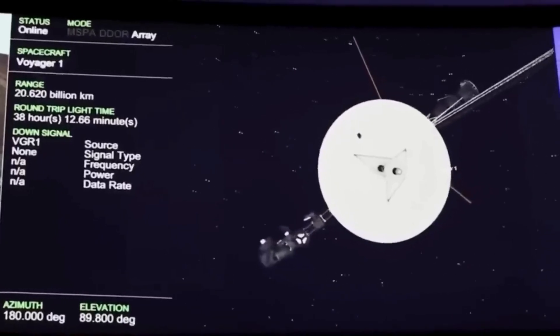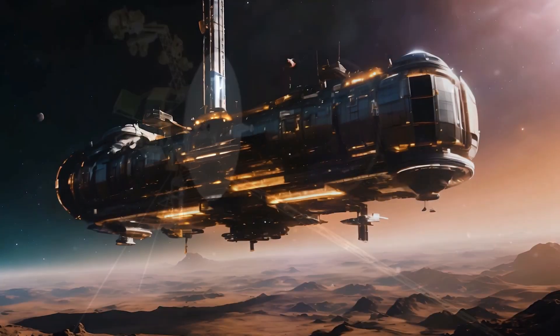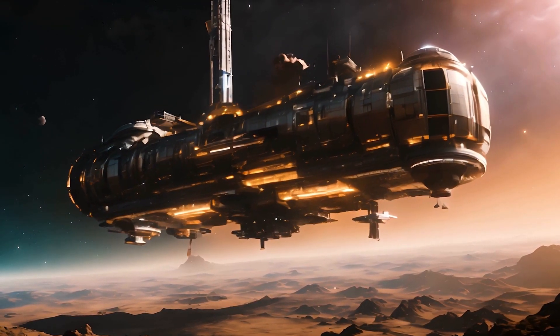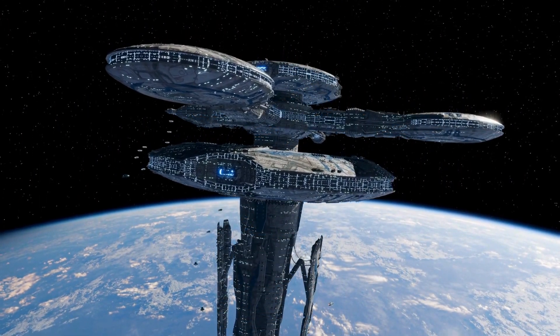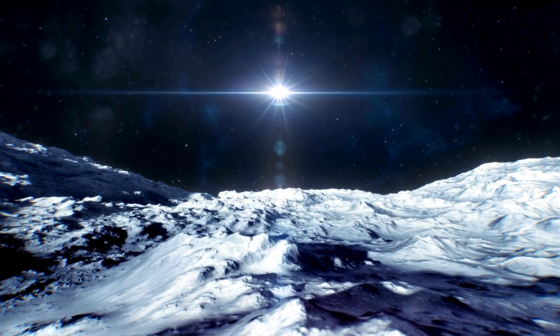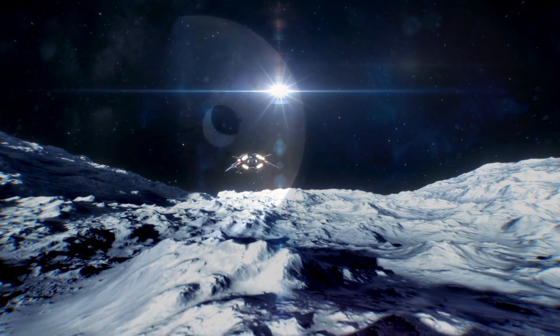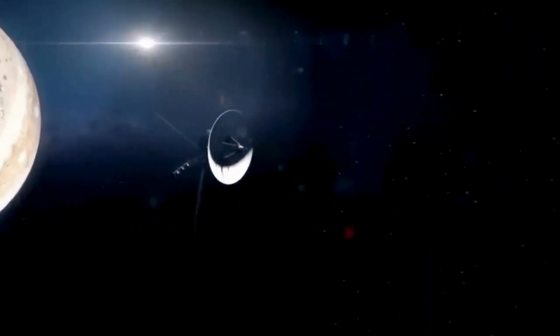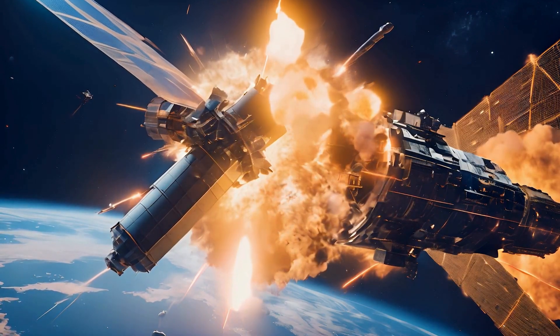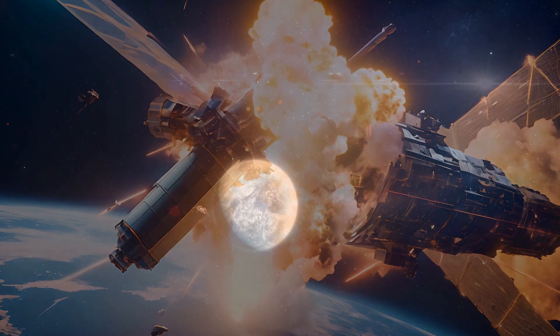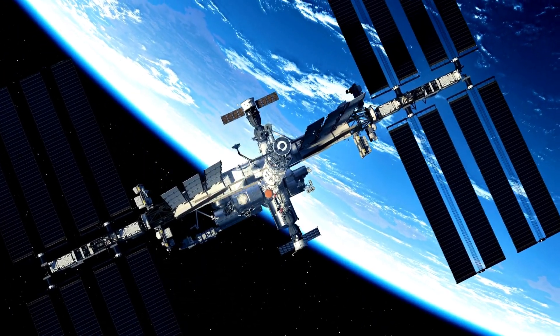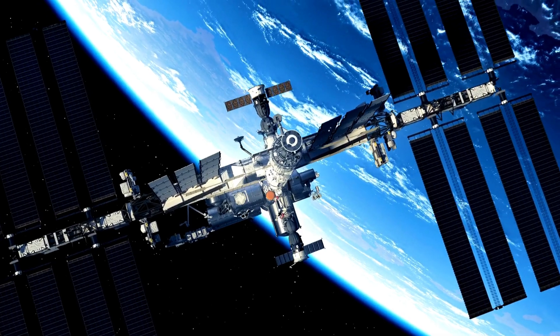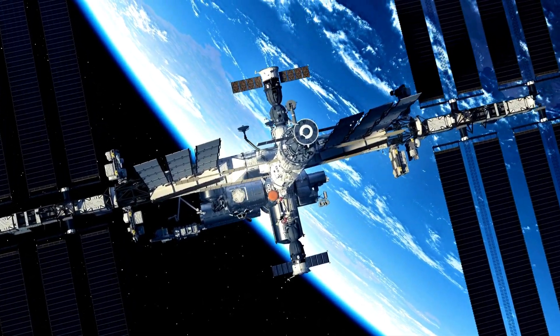In March, the Voyager engineering team at NASA's Jet Propulsion Laboratory in Southern California confirmed that the issue was tied to one of the spacecraft's three onboard computers, called the Flight Data Subsystem, FDS. The FDS is responsible for packaging the science and engineering data before it's sent to Earth. The team discovered that a single chip responsible for storing a portion of the FDS memory, including some of the FDS computer's software code, isn't working. The loss of that code rendered the science and engineering data unusable.